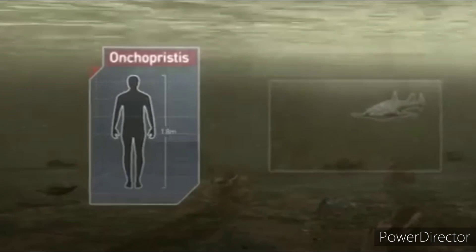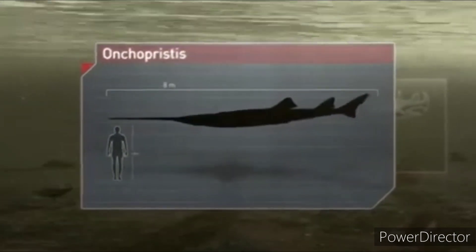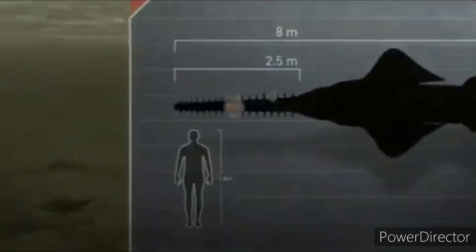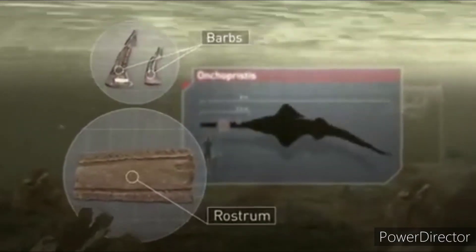This is Oncopristis, an eight-meter-long giant sawfish similar to those alive today. The saw-like rostrum is lined with lethal barbs and is in itself up to two and a half meters in length.